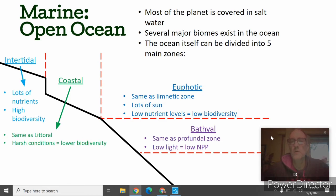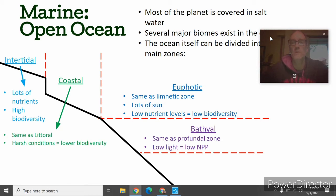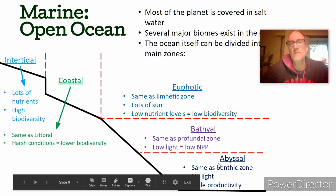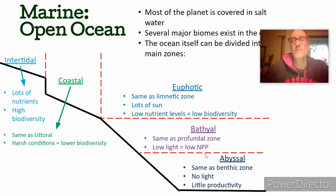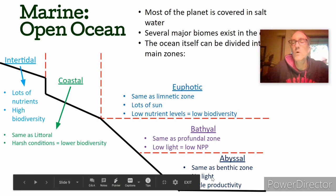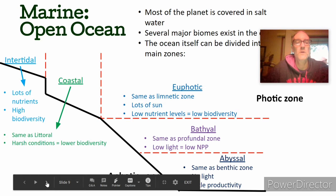The bathyal zone is very similar to the profundal zone — low light and low net primary production. Then lastly, the abyssal zone is similar to the benthic zone in lakes: no light and very little productivity. However, it is very important — we are discovering many ecosystems and diverse organisms down in the abyssal zone. Because it's so remote and difficult to get to, we're still learning about the role of oceans in storing nutrients and cycling carbon all the way down to the abyssal.